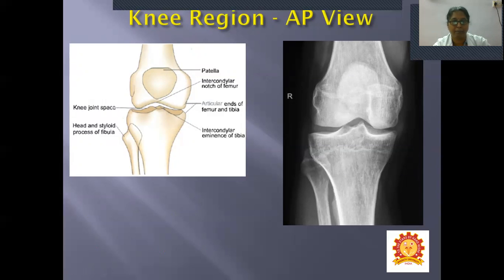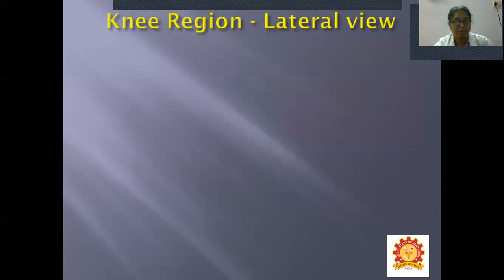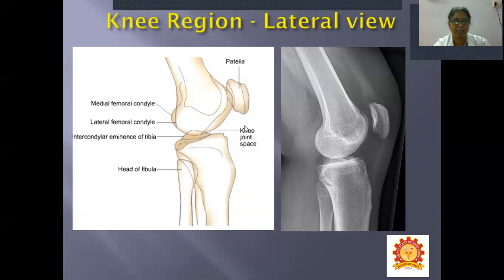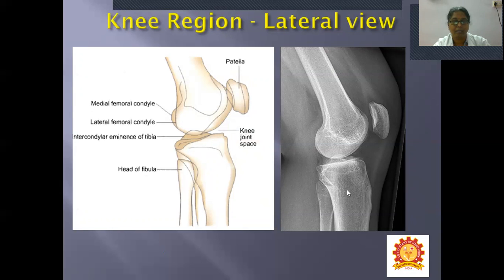In the lateral view of the knee joint, the patella is anterior, the joint space is visible, and the head of the fibula is seen again. The intercondylar eminence projects upwards. The lateral condyle and medial condyle of the femur are identifiable. Apply the schematic picture to the X-ray: patella anteriorly, lower end of femur with lateral and medial condyles, intercondylar eminence of the tibia, and head of the fibula.